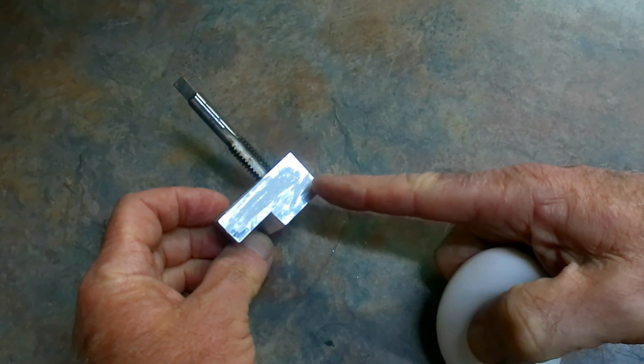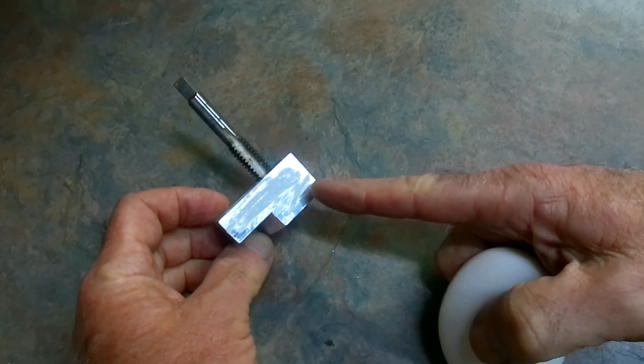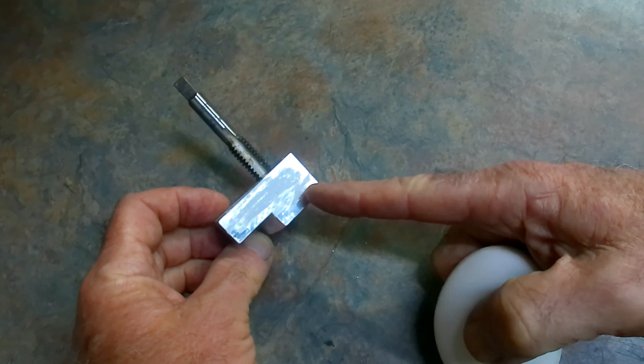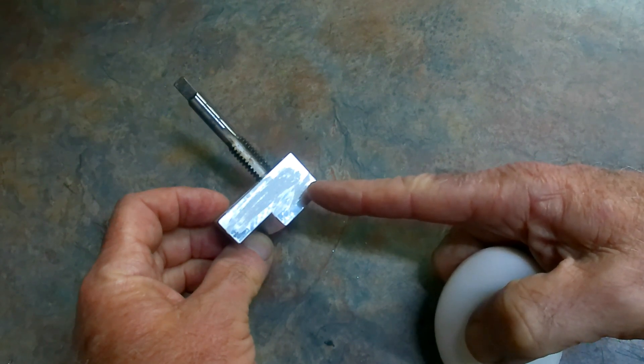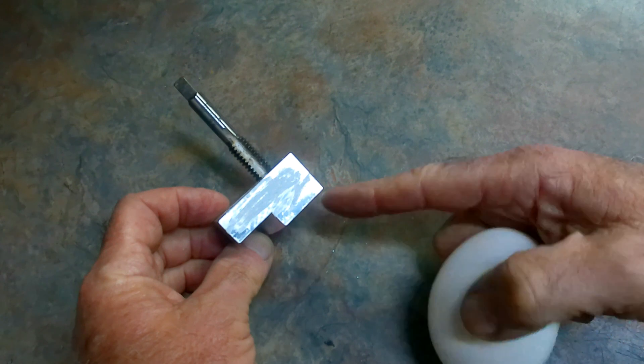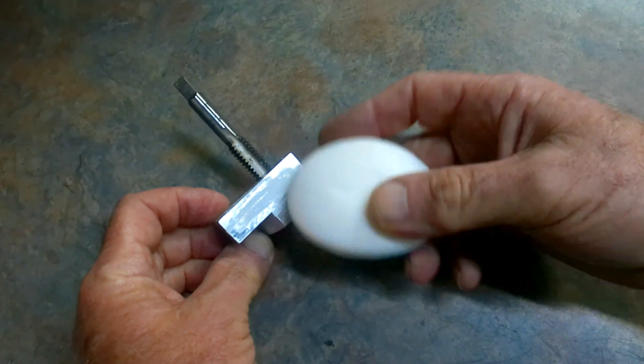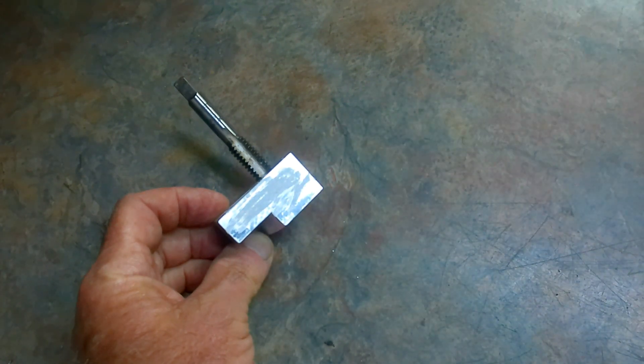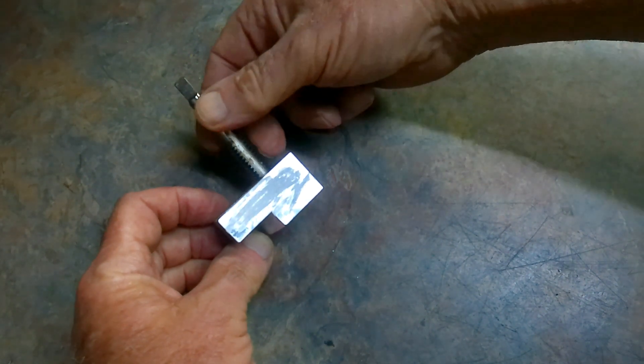otherwise you stand the risk of melting it. But that's quite a useful tip if you want to bend any aluminium, if it's a bit springy on you. Household soap, rub it on there, heat it until it turns black, and that's the annealing temperature of aluminium.